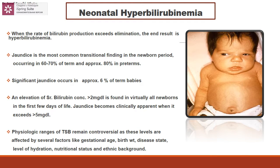When the rate of bilirubin production exceeds the rate of elimination, the result is hyperbilirubinemia. Jaundice is the most common transitional finding in the newborn period, occurring in about 60–70% of term babies and approximately 80% of preterm babies. Significant jaundice occurs in approximately 6% of term babies. Elevation of serum bilirubin above 2 mg/dL is found in virtually all newborns in the first few days, but clinical jaundice becomes apparent when total serum bilirubin exceeds 5 mg/dL.